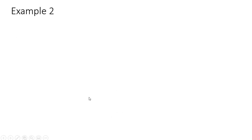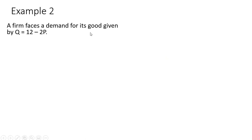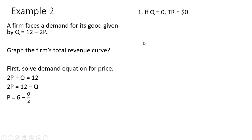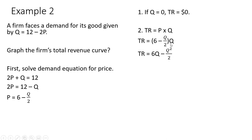Let's do one more example. Example two: a firm faces a demand for its good — we want to graph the total revenue curve for the firm. First, solve the demand equation for price. Taking this demand equation and solving it for price: adding 2P to both sides, subtracting Q from both sides, and dividing through by two, we now have our inverse market demand. As before, we're going to find the two quantities where total revenue is zero — total revenue will always be zero at zero units of output. Next, generate our total revenue function by plugging in 6 minus one-half Q where we have P, then distributing Q.